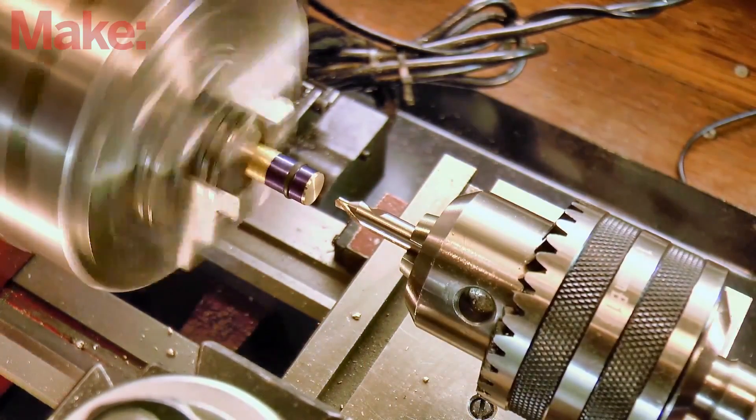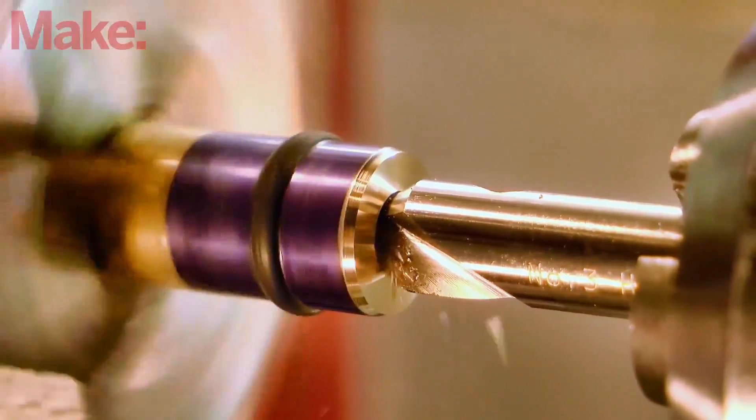Once you've got a tight seal, use a center drill to put in a small recess at the end, and then insert the piston full depth into the cylinder and mark the end.